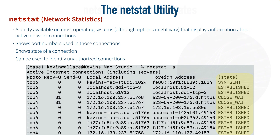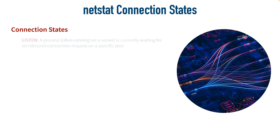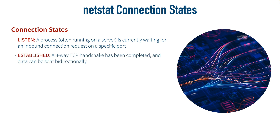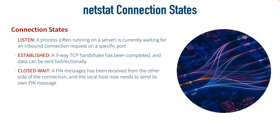Let's consider some common connection states. First is the LISTEN state, often seen on a server — a process is waiting for an inbound connection request on a specific port, such as port 443 for a secure web server. Another state is ESTABLISHED, meaning two-way communication has been set up between this system and a remote system, and the TCP three-way handshake has been completed.